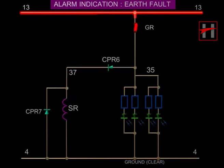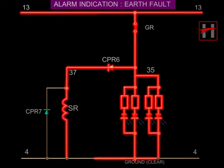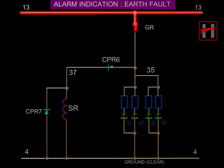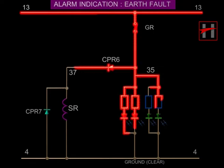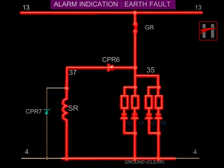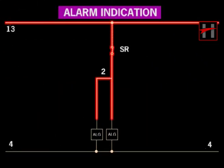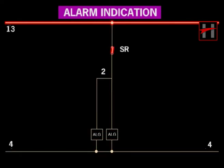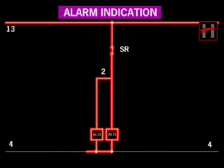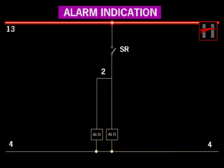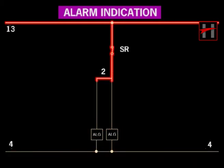The current flows through the CPR, cable number 37, energizes the signal relay, and completes the path with cable number 4. The SR interlock closes and the current from cable number 13 flows through the SR interlock, cable number 2, energizes the alarm bell, and completes the path with cable number 4.